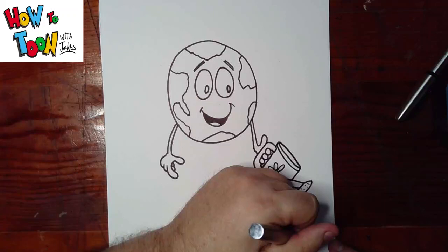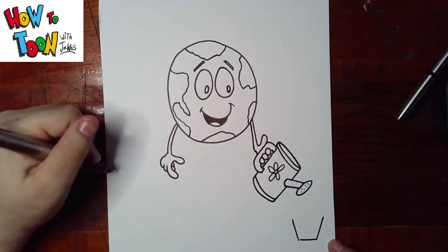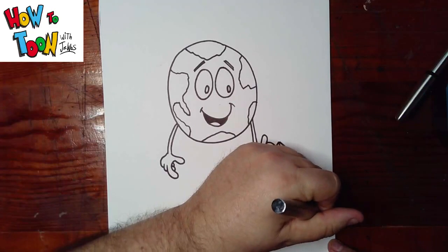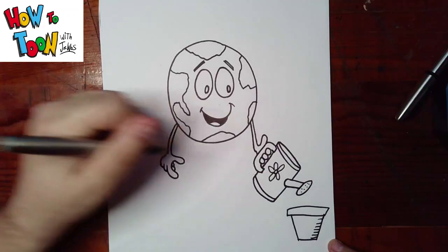Now, here, we're going to add a flower pot. Just connect that all up like that. A couple of lines on the side for shading.